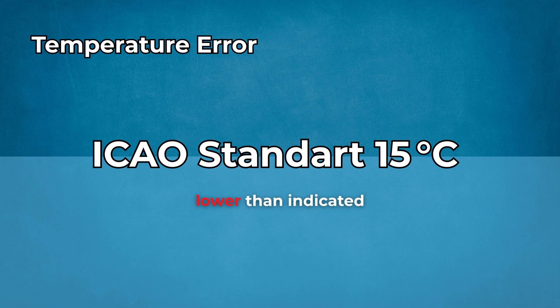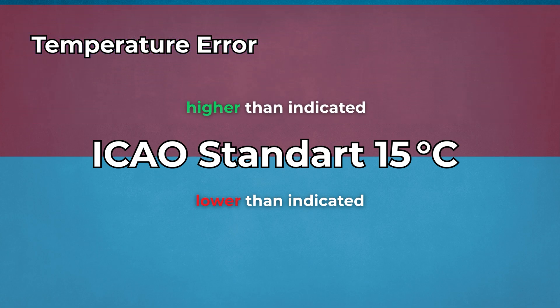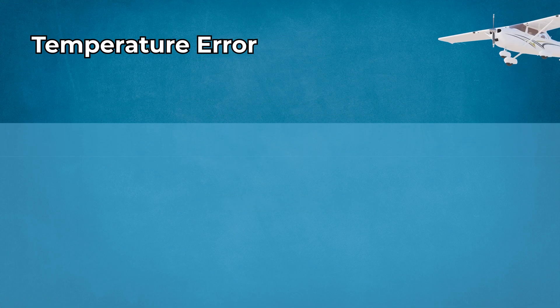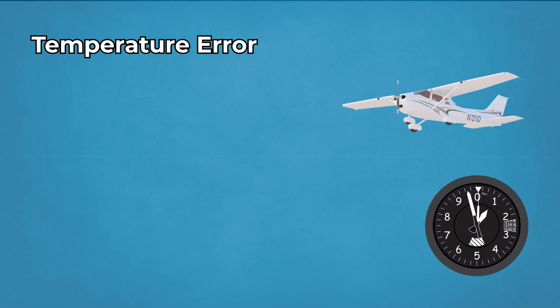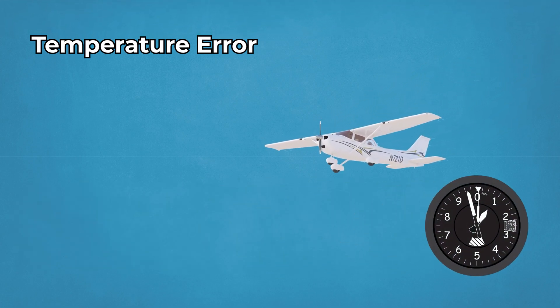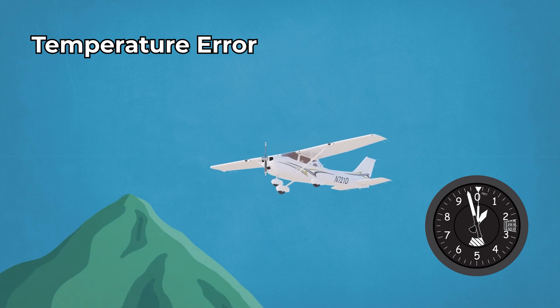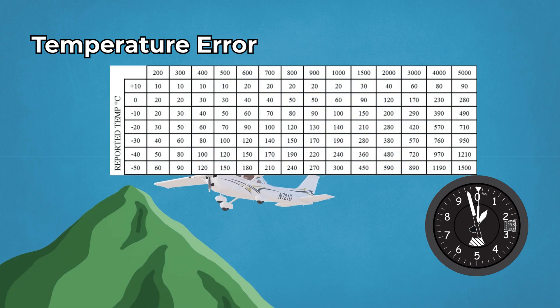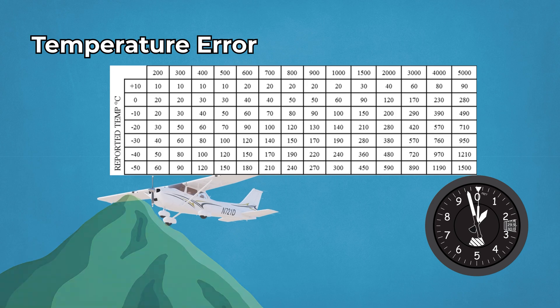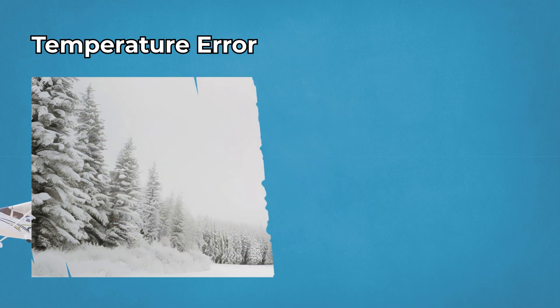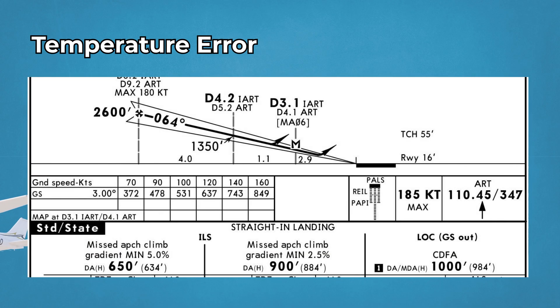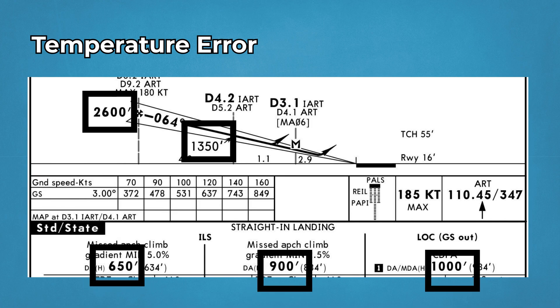The opposite is true when it's warmer. You're higher than indicated. In cold approach conditions, you might descend based on your altimeter but actually be too low, creating a real controlled flight into terrain risk. FAA charts help correct altitudes in cold temperatures. Use ATC temperature reports to apply corrections. In very cold climates, add altitude to your minimum descent altitude or step-down fixes as per published guidance.